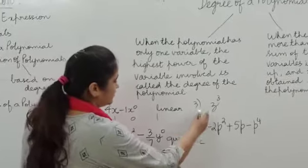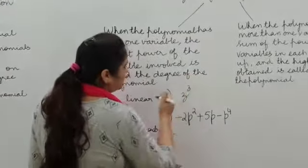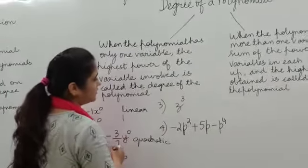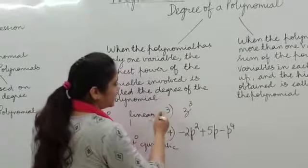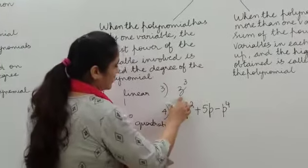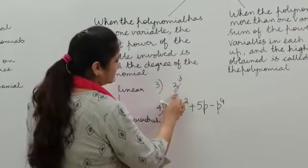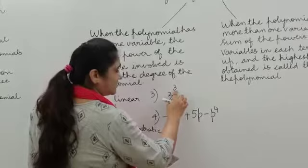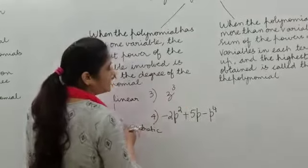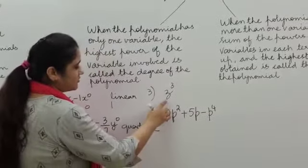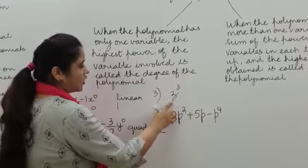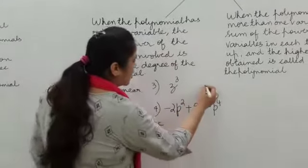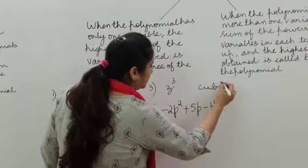Look at this one. z³ is a polynomial. The variable is z and its power is 3. The highest power is 3, so this is a polynomial of degree 3, also called a cubic polynomial.